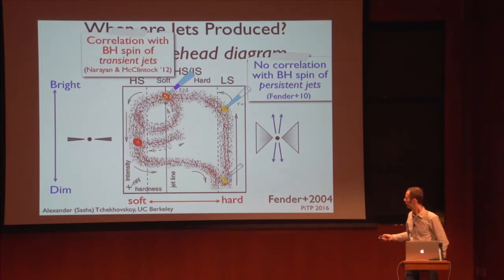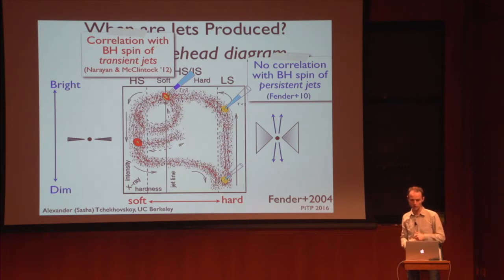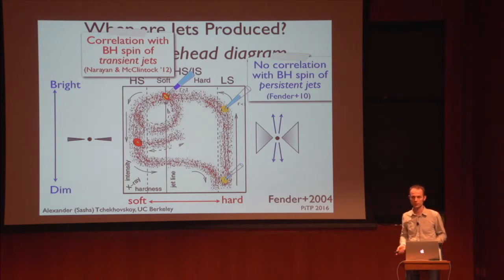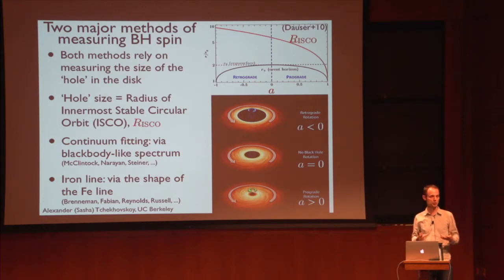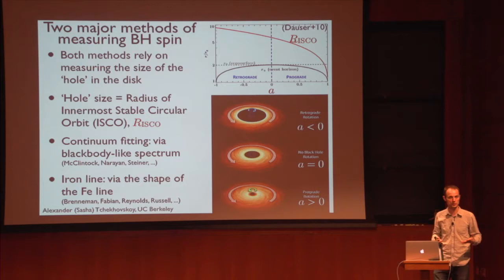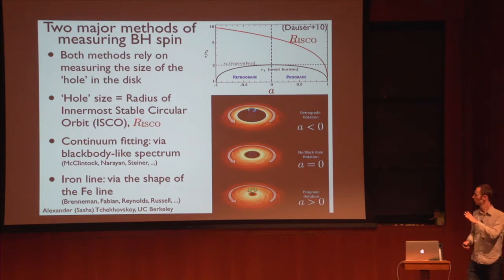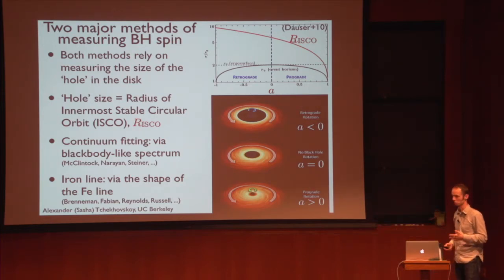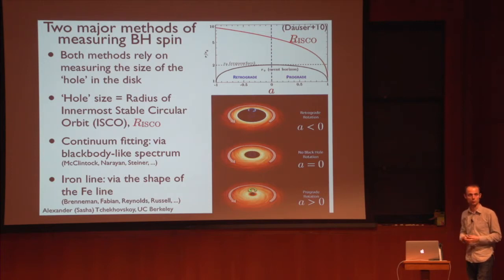For transient jets, however, there was a claim of a rather exciting correlation between the jet power and the black hole spin. Before discussing that result, let me ask: how do we know what the black hole spin is in the first place? In recent years a variety of methods have been developed to measure black hole spin. Different methods start to agree on values of spin, taking care of systematic uncertainties. We now know maybe a dozen black holes in our galaxy whose spins have been measured, and similar measurements have been performed for supermassive black holes.